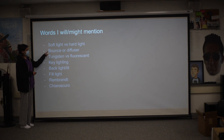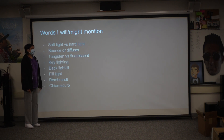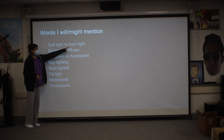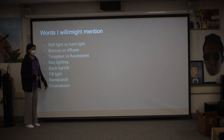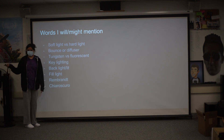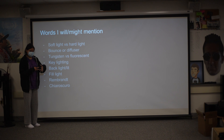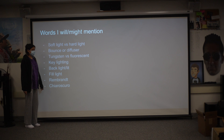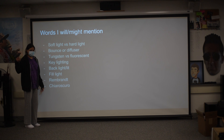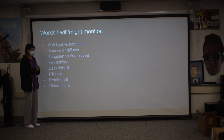Bounce or diffuser: a bounce basically bounces the light from one place to another. A diffuser softens the light and doesn't make it so harsh. Harsh light is basically like when you're outside in the sun and you can make shadow puppets — that's harsh lighting. Soft lighting is more like a cloudy day where your shadows aren't as defined.